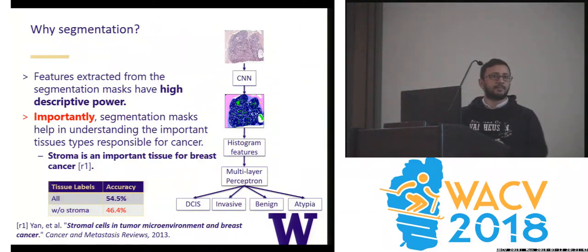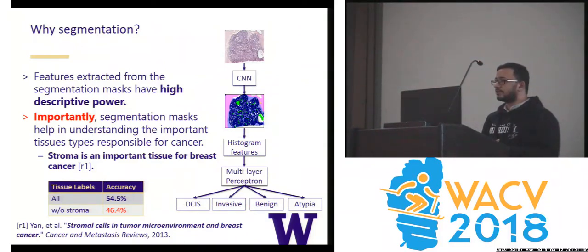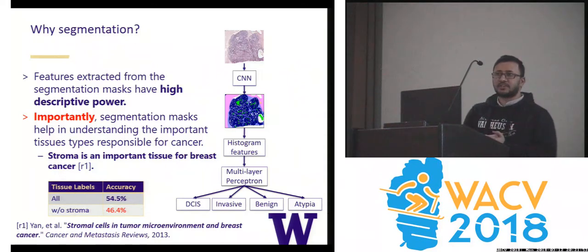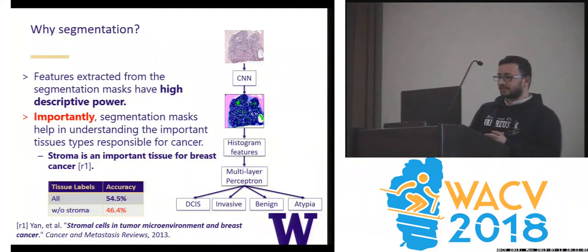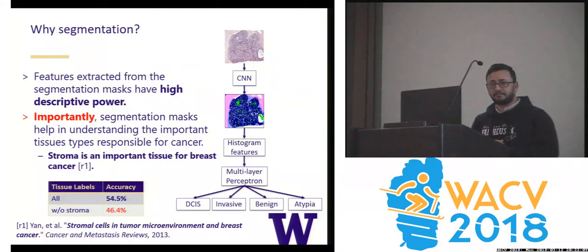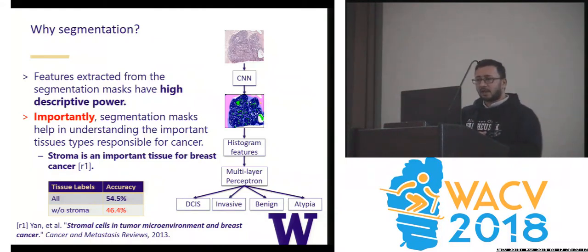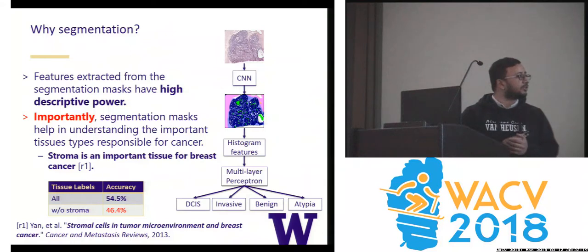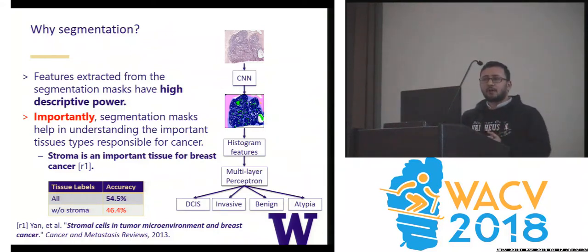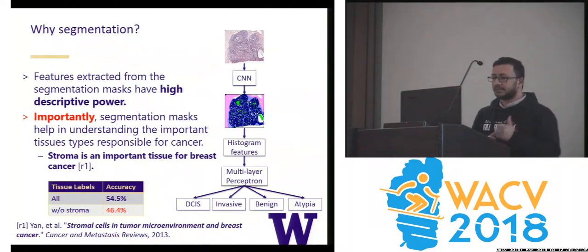An important question is why we want to do the segmentation. Our experimental results suggest that simple features extracted from these segmentation maps have very high descriptive power. We extracted histogram features, frequency and coherence features, and trained a multi-layer perceptron to classify into four different cancer types. With just this simple structure, we attain 55% diagnostic classification accuracy. Importantly, the segmentation mask helps in understanding which tissue types are responsible for cancer. For example, when we removed the stroma tissue from our features, it dropped the accuracy by 8%, which is consistent with findings from pathologists.